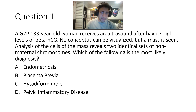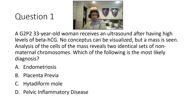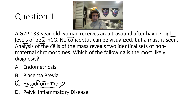Practice question: A G2P2 33-year-old woman receives an ultrasound after having high levels of beta-HCG. No conceptus can be visualized, but a mass is seen. Analysis of the cells reveals two identical sets of non-maternal chromosomes. Which of the following is the most likely pregnancy? Take a moment to think about it.